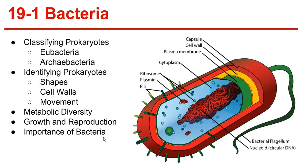Nitrogen fixers. The process of converting nitrogen gas into a form plants can use is known as nitrogen fixation, and many plants have symbiotic relationships with bacteria that do nitrogen fixation. Human uses of bacteria include cleaning up oil spills, removing waste products from water, or synthesizing drugs and chemicals.